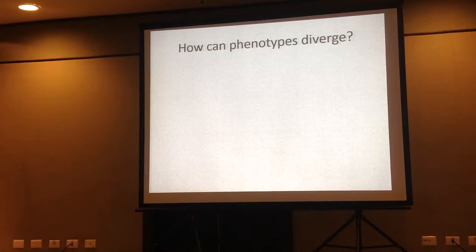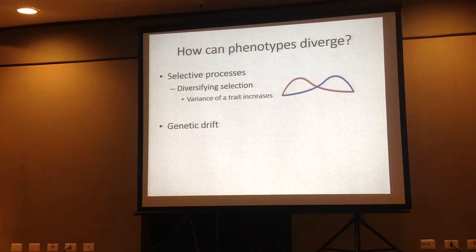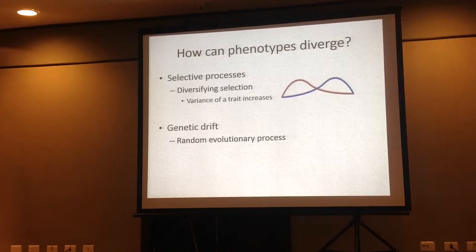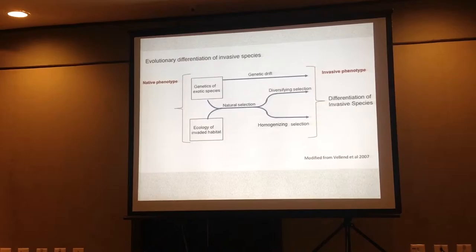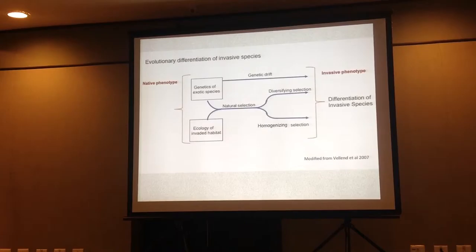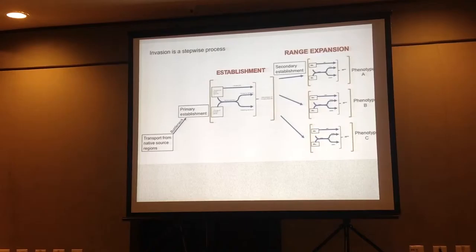However, I had to figure out what was driving this. Was it a selective process, such as diversifying selection, where we see an increase in the variance of the trait? Or are these differences between native and invasive regions just the result of genetic drift — a random evolutionary process resulting from bottlenecks or founder effects in the invasive region? So the key question is: is it selection or is it genetic drift? These link to my two hypotheses for the differences in native and invasive phenotype — either drift from random processes resulting from bottlenecks, or actual selective processes driven by water limitation.